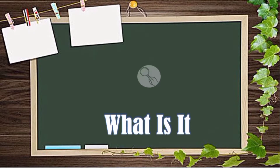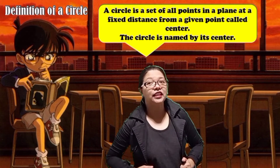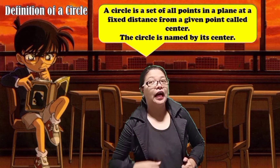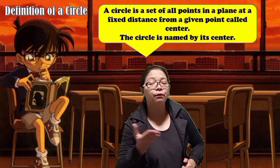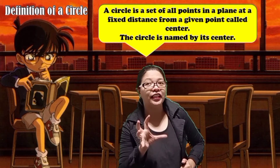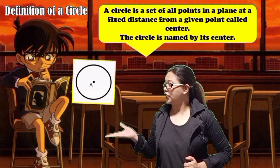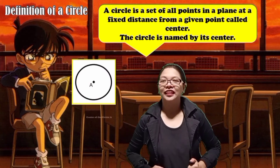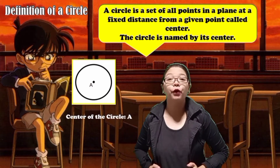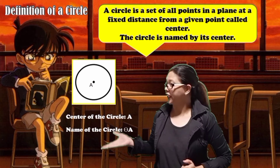What is it? Detective Conan and I will give you the definition of circle. A circle is a set of all points in a plane at a fixed distance from a given point called center. The circle is named by its center. Now look at this illustration. The center of a circle is point A. Therefore, we can name the circle as Circle A.